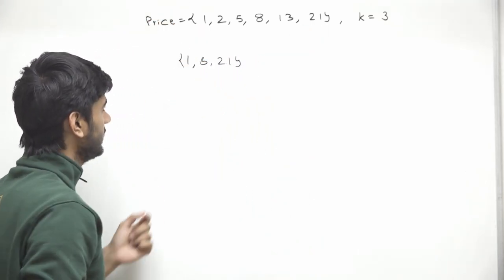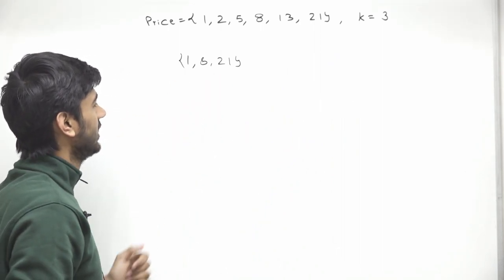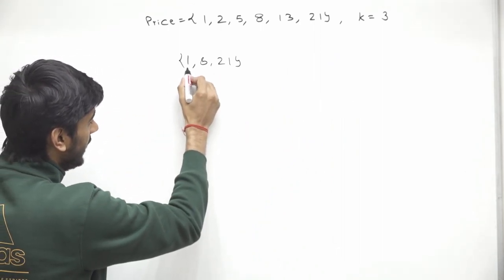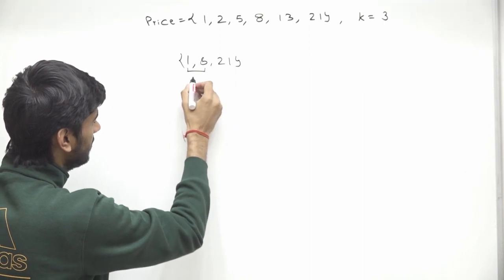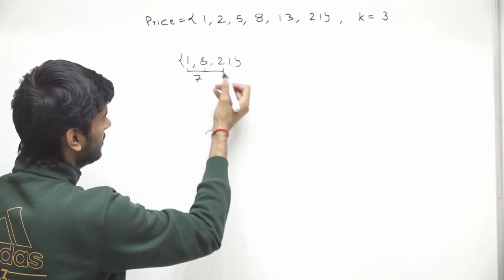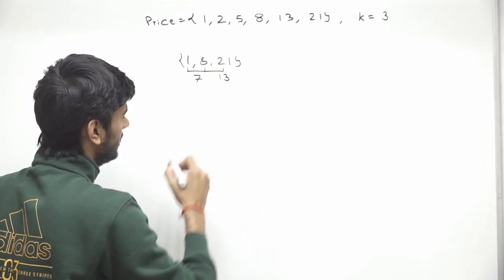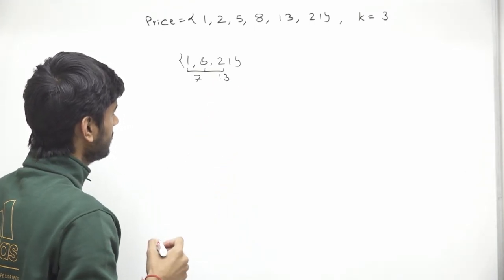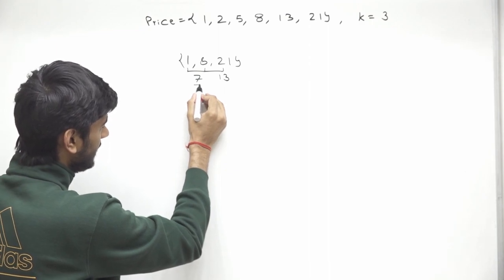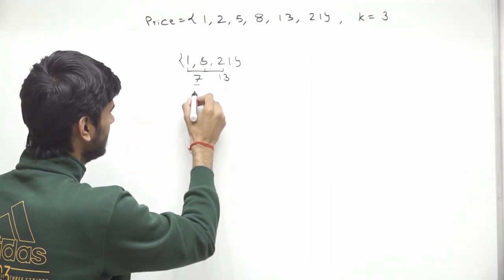For this basket containing three candies, what is the tastiness? Tastiness is the minimum difference between any two candies. The difference between the first two candies is 7, and the difference between the last two is 21 minus 8, which is 13. So the minimum difference is 7, meaning the tastiness of this basket is 7.